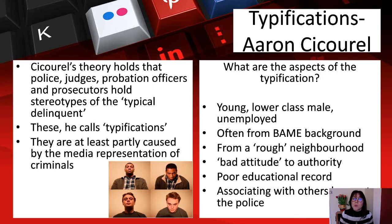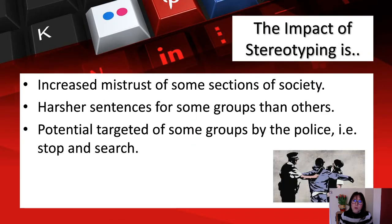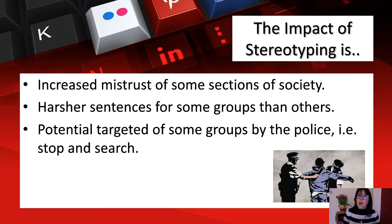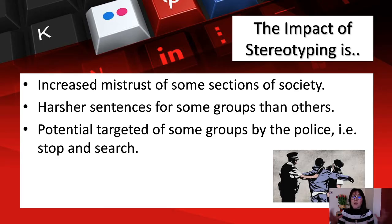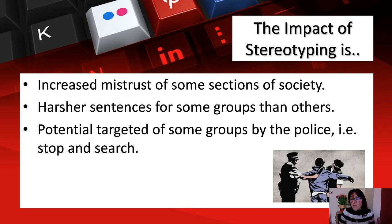Essentially, if you fall into these categories you are treated as guilty until proven innocent — you will be judged in court just based on how you look because of these typifications. The impact of this stereotyping includes increased mistrust of some sections of society, harsher sentences for some groups than others, and potential targeting of some groups by the police through stop and search. For example, certain cars can give an impression about their drivers and lead to police stops, forming stereotypes partly driven by the media.